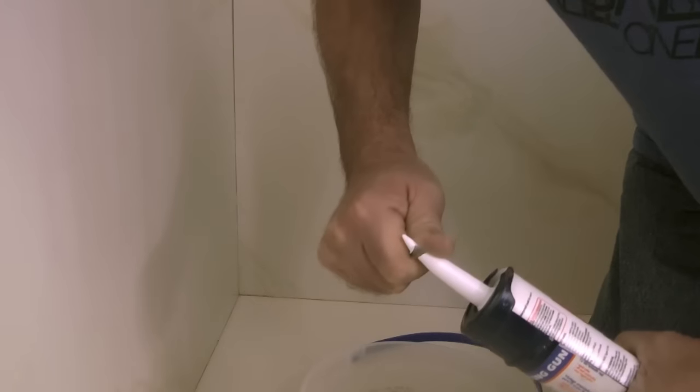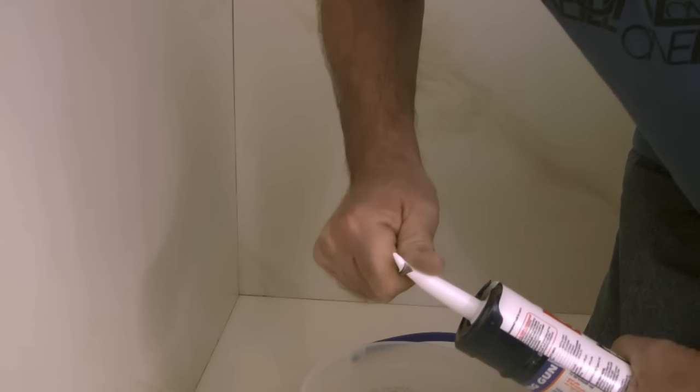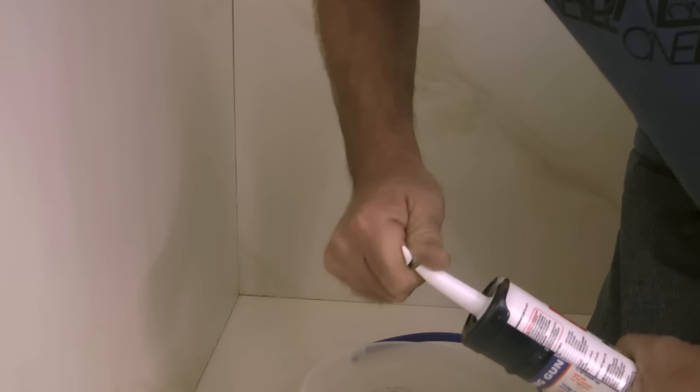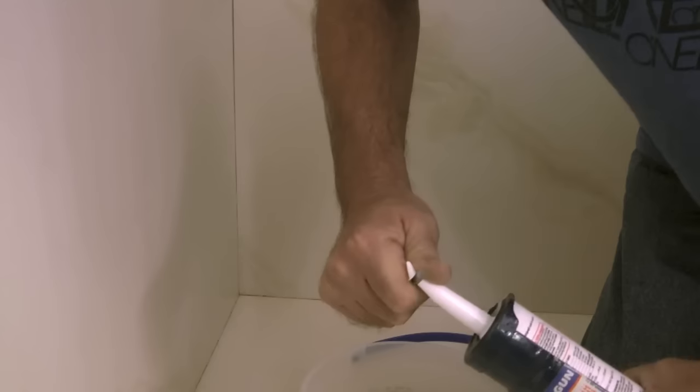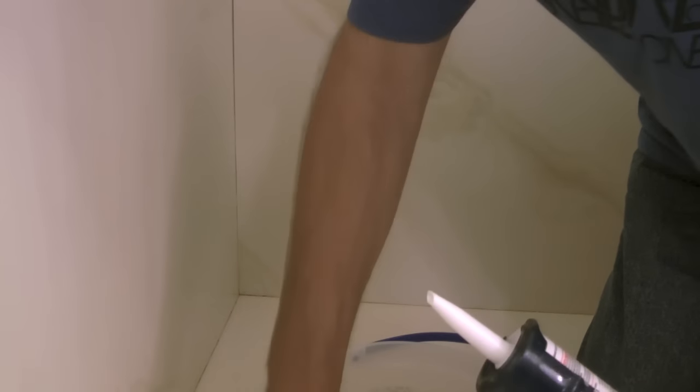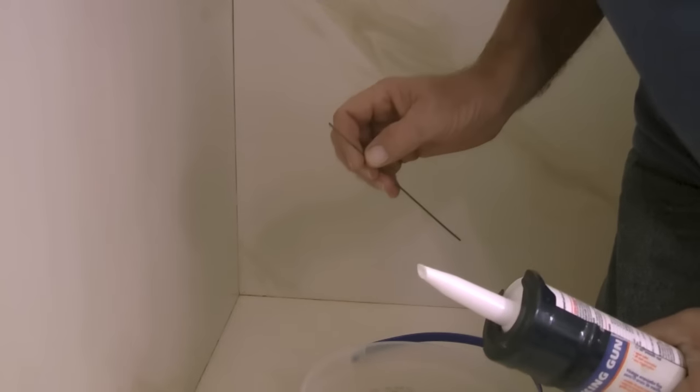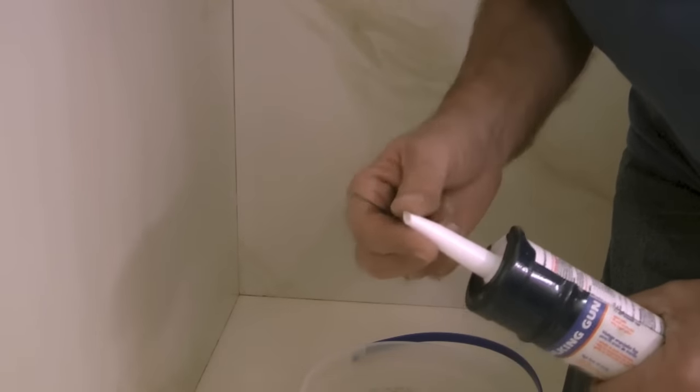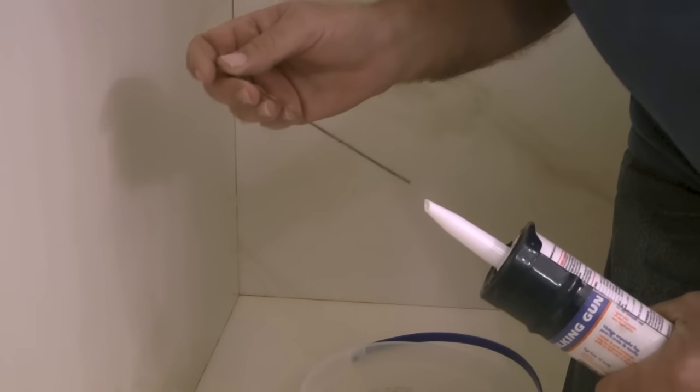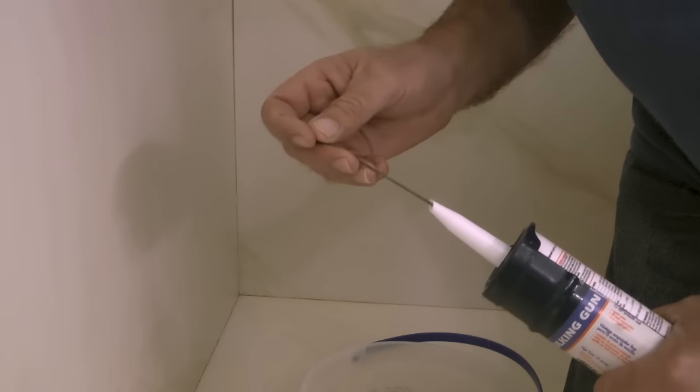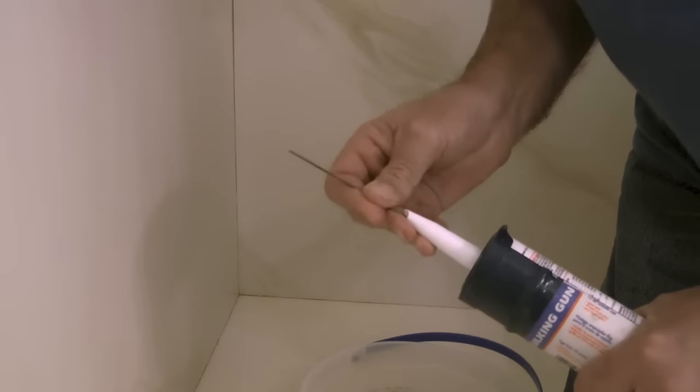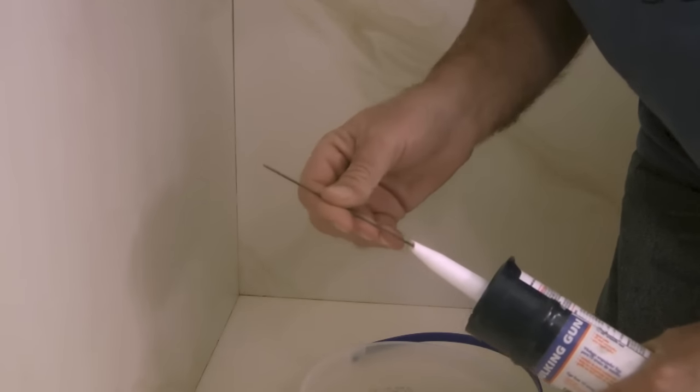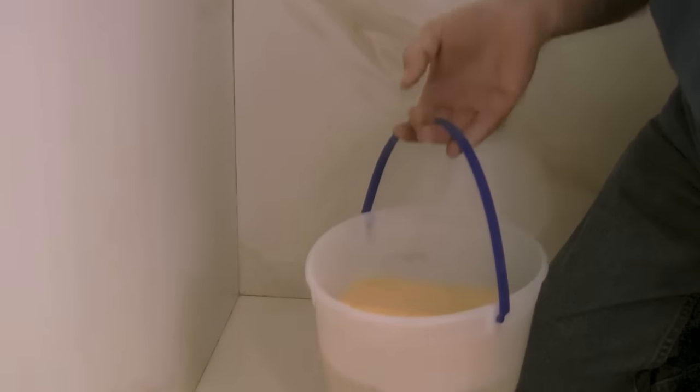Once all of the seams have dried out what I will do next is take a tube of shower caulk, trim the end on a 45 degree angle, take a piece of wire and punch the seal in the tube of the shower caulk, then I will put some warm water in a small bucket.